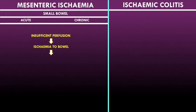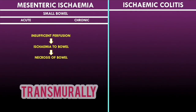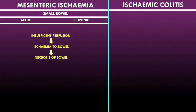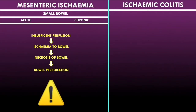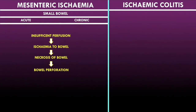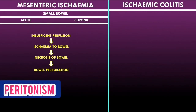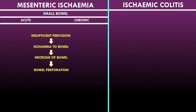Ischemia can progress to inflammation of the bowel and then to necrosis. If this necrosis occurs transmurally through all layers of the bowel, there is a high risk of bowel perforation, which is a very fatal complication. A perforated bowel can lead to peritonism and a high risk of abdominal sepsis. The key thing to remember is that mesenteric ischemia carries a risk of bowel perforation which can be fatal, for example by causing sepsis.